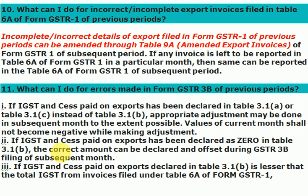अगर 3B में गलती से information गलत लिख दी है — जैसे export details को 3.1B में न लिखकर 3.1A में लिख दिया — तो next month में simply वो details 3.1B में लिख दो और जो already 3.1A में लिखा है उसे अगले month की 3.1A में कम कर देना। इसी तरह अगर IGST and CES paid on export को zero declare कर दिया है, तो भी subsequent month में जाकर इसे correct कर सकते हैं।